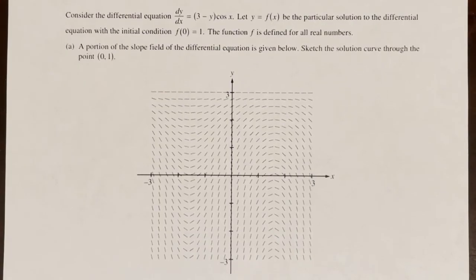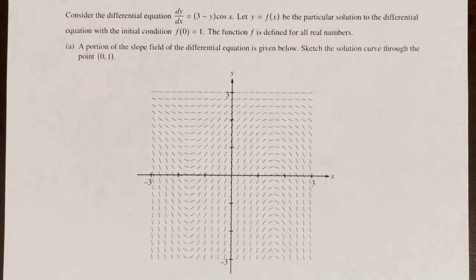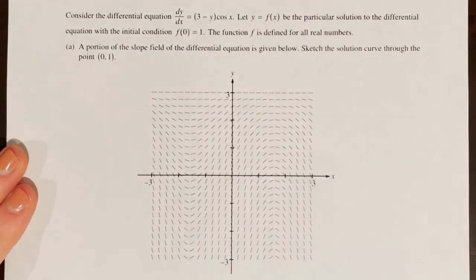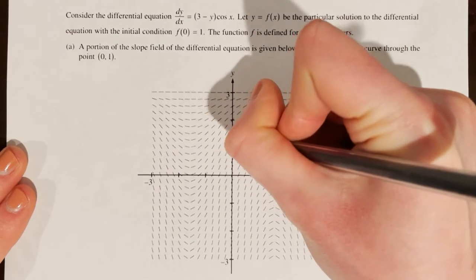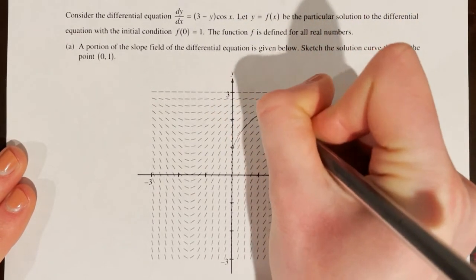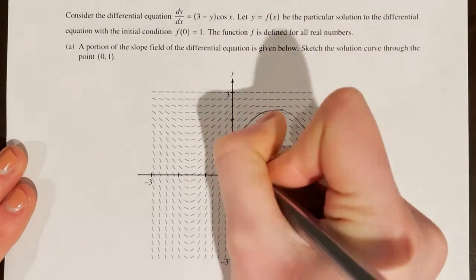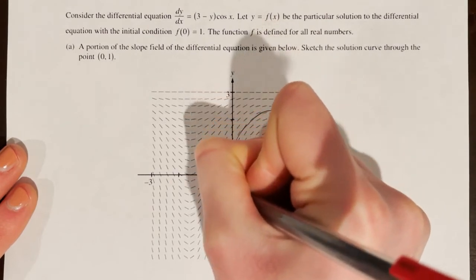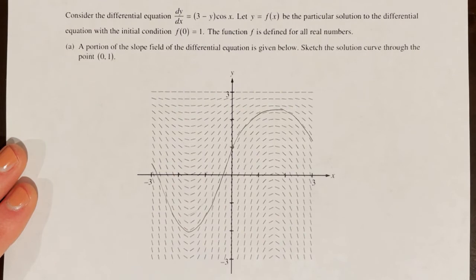Consider the differential equation dy/dx = (3 - y)cos(x). Let y = f(x) be the particular solution with initial condition f(0) = -1. Part A: a portion of the slope field is given. Sketch the solution curve through (0, 1). Finding that point, the slopes are steep and positive initially, then level off, then go back down. We follow the tangent lines on both sides, keeping our curve parallel to them.